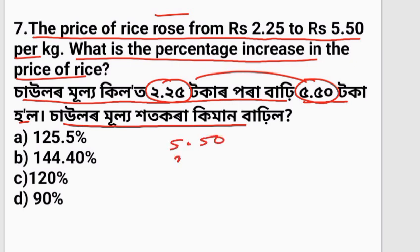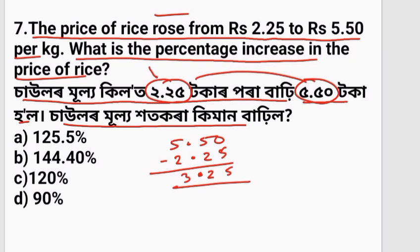I bought at 2.50, I bought at 2.50. The new price is 3.5 and 5.5. So the difference is 2.5, giving a result of 5.5, with a gain of 2.5.